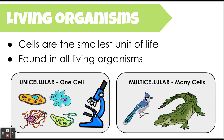Cells are the smallest unit of life because one single cell represents a living organism. Every living thing is either one cell or it's made up of many cells. There are many different types of living organisms that are unicellular — made up of one single cell — like bacteria and amoebas, whereas there are many organisms that are multicellular, made up of many, many cells.